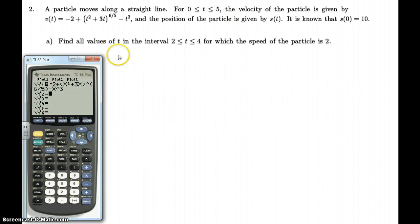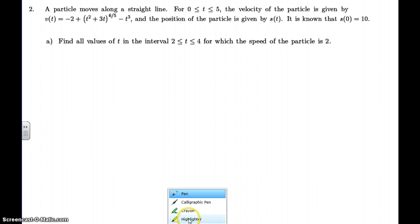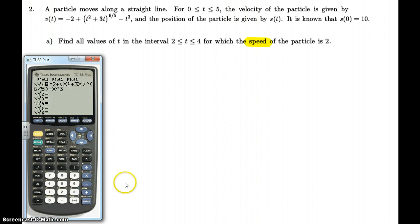Notice that part A asks us to define all the values of t in the interval from 2 to 4 for which the speed of the particle is 2. The key here is the word speed, because speed actually means the absolute value of the velocity.